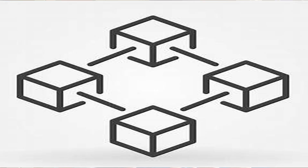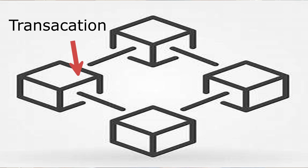It's called blockchain because the record of transactions is represented as a chain of blocks, wherein each block represents a certain transaction. Whenever you want to make a transaction, you create a block and add it onto the blockchain. The blockchain is simply a record of transactions made by anyone in the world.